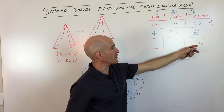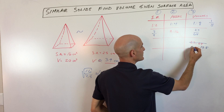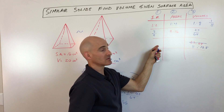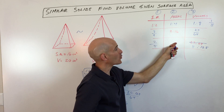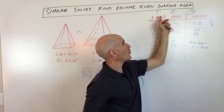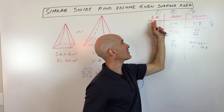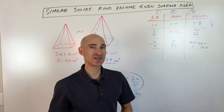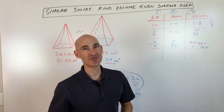If they give us the ratio of surface areas as 9 to 16, take the square root: square root of 9 is 3, square root of 16 is 4, so the scale factor is 3 to 4. Then cube the scale factor to find the ratio of volumes: 3 cubed is 27, 4 cubed is 64. If they give the ratio of volumes as 8 to 125, take the cube root: cube root of 8 is 2, cube root of 125 is 5 — that's the scale factor. Then square it to get the ratio of areas: 4 to 25.